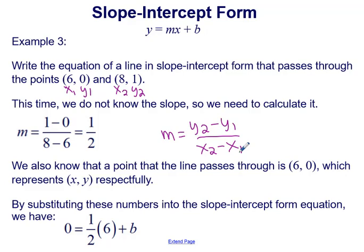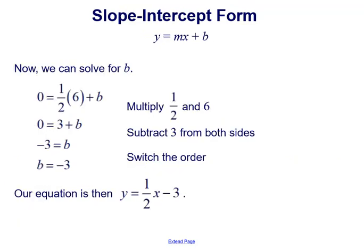Now that we have the slope, we use the point (6, 0) as x and y. Substituting into y equals mx plus b gives 0 equals 1 half times 6 plus b. Multiplying 1 half times 6 gives 3, and subtracting 3 from both sides gives b equals negative 3. Using this with our slope, our equation is y equals 1 half x minus 3.